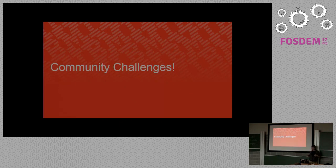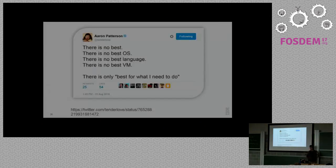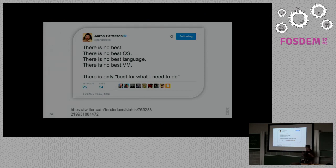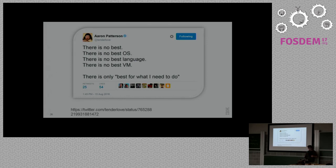The first set of challenges I want to talk about are challenges in the community. Aaron Patterson has this great tweet: there is no best of anything. So for us, there is no best Ruby JIT, there is no best Ruby interpreter — there's just what works for your use case. For your use case, that might be TruffleRuby, Rubinius, Ruby plus OMR, or MRuby. As we try to work in the VM, we need to make the right trade-offs.